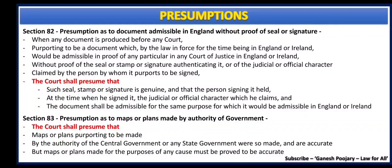Section 82 discusses about presumption as to documents admissible in England without proof of seal or signature. Where a particular document is admissible in England or Ireland without any seal, stamp, or signature, and it is considered as genuine there, if the same document is called by the Indian court for the same purpose, the document needs to be considered as genuine without seal, stamp, or signature. Whatever is accepted by the English or Irish court without seal, stamp, or signature shall be presumed by the Indian court as genuine also.